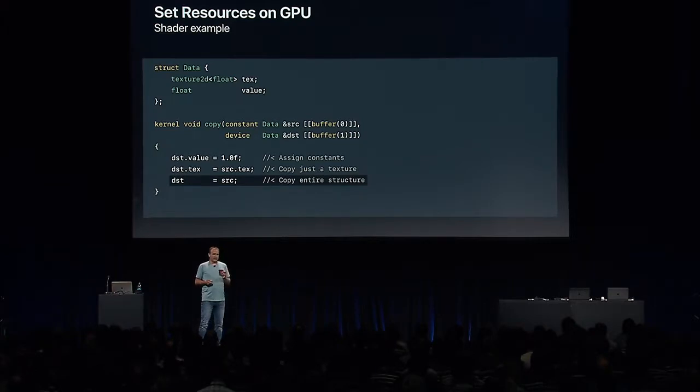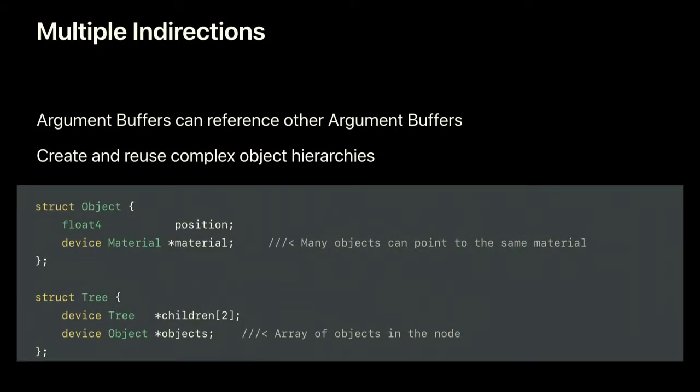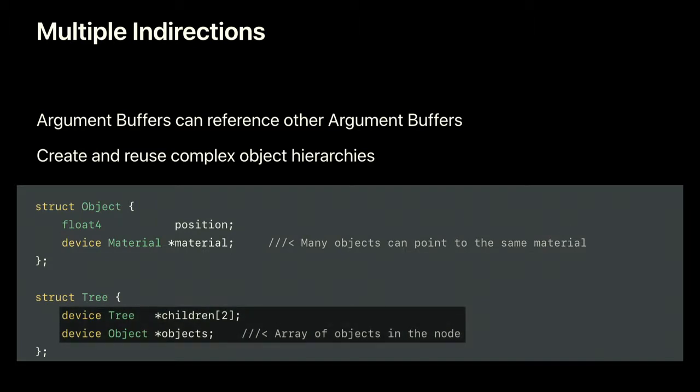The last great feature is the ability of argument buffers to reference another argument buffer, allowing you to create reusable and complex object hierarchies just as you're used to from C++, Swift, or Objective-C. For example, if you have many objects but very few materials, you can reference the material from each object and save memory. Or you can build your scene graph as a binary tree pointing to objects and tree nodes as you need them, and you can share this data with the CPU as well.